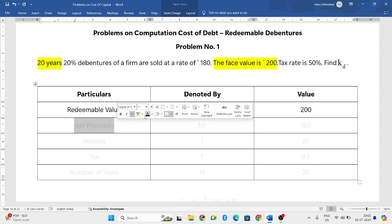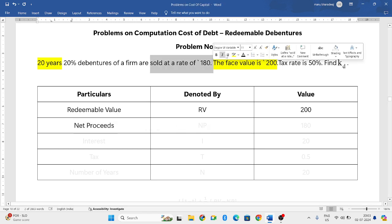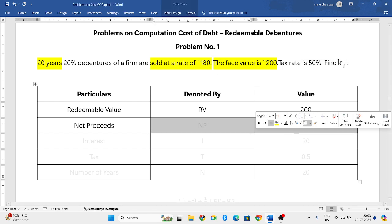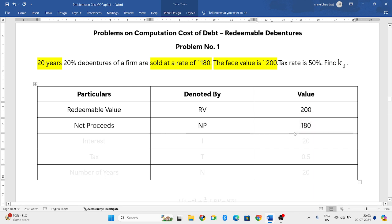Next, net proceeds, means what is the amount you are raising from debentures now. Sold at a rate of 180. That becomes your net proceeds. Net proceeds is 180.